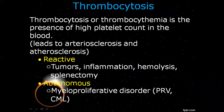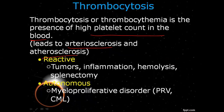If we talk about thrombocytosis, it is the presence of high platelet count in the blood. If we have a high platelet count in the blood, you will get thrombocytosis. This leads to atherosclerosis. You can have reactive forms like tumor, inflammation, hemolysis, splenectomy, and atherosclerosis, in which we have myeloproliferative disorders.